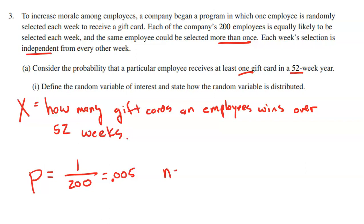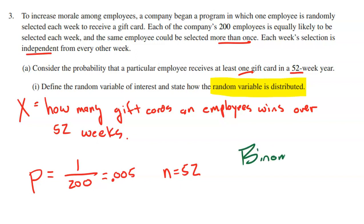We're only looking at 52 weeks, so how many gift cards can an employee win? They could win zero, one, two, three times — or, incredibly, every single week for 52 straight weeks, because an employee can win more than once and each week is independent. The last key feature is what type of random variable this is: it is a binomial distribution.